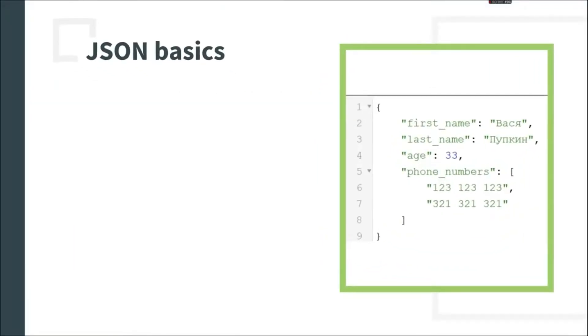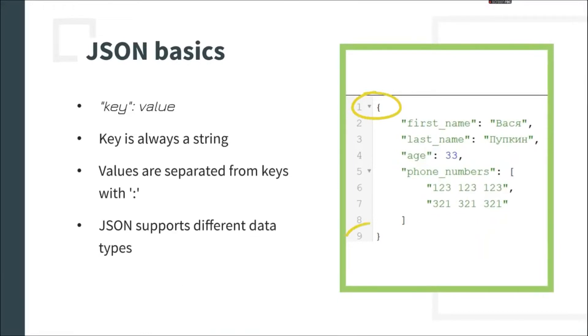JSON object starts and ends with a curly bracket and contains key value pairs where key is always a string. For example, first name, colon, Alex. Key value pairs are separated by commas.